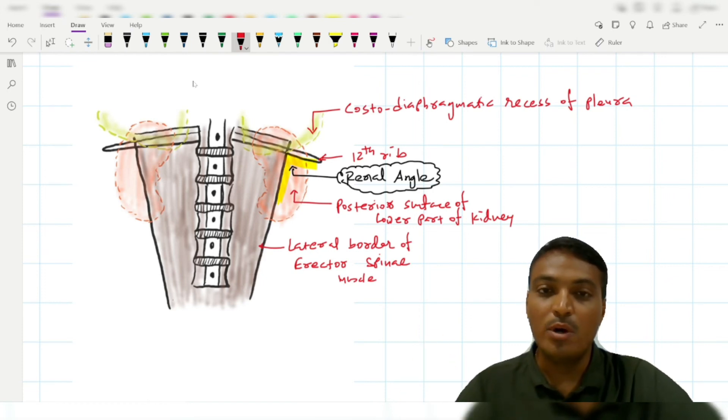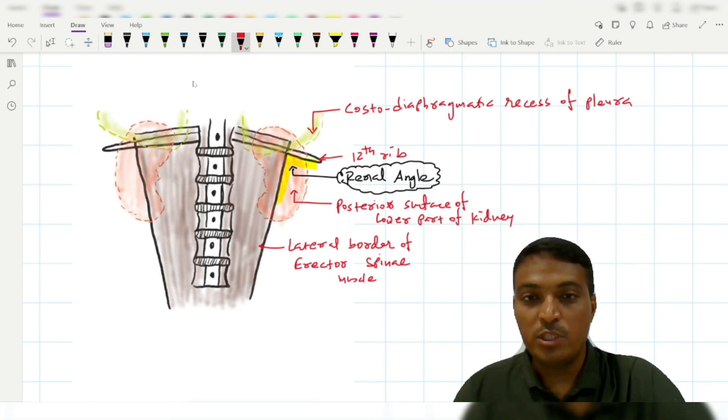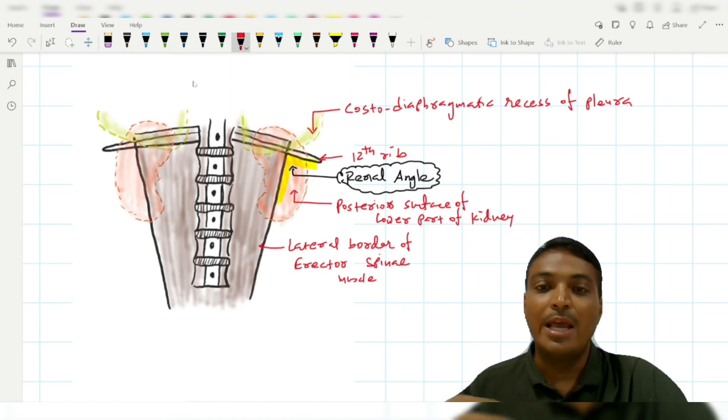At that time, an incision over this false renal angle will lead to respiratory embarrassment to the patient. To avoid this complication during operative procedures on the kidney, the surgeon should count the renal angle from the sternal angle only.